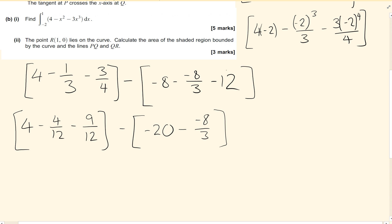Because the other side is twelfths, I'm going to make everything into twelfths. So let's sort this one out as twelfths. So 4 is 48 twelfths, minus 4 minus 9 twelfths.